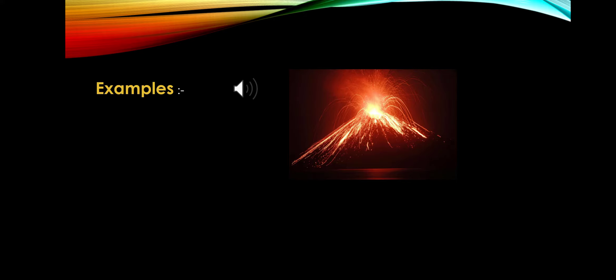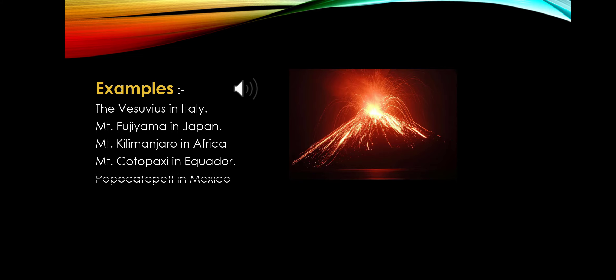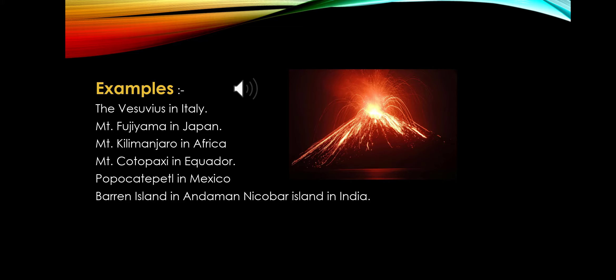A few important examples of volcanic mountains are: Vesuvius in Italy, Mount Fuji in Japan, Mount Kilimanjaro in Africa, Mount Cotopaxi in Ecuador, Popocatépetl in Mexico, and Barren Island in the Andaman and Nicobar Islands in India. These are the most important examples of volcanic mountains — you have to remember them.